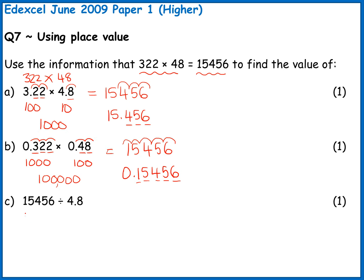So you can estimate this by saying that's about 15,000 and 4.8 is quite close to 5. Now if I do 15,000 divided by 5, well 15 divided by 5 is 3. Pop those three zeros on. So it's 3,000. So my answer should be somewhere around 3,000.